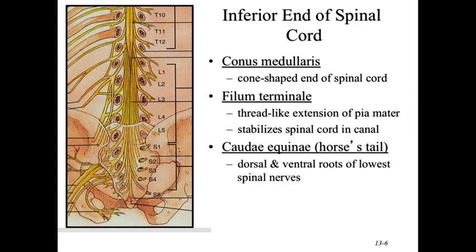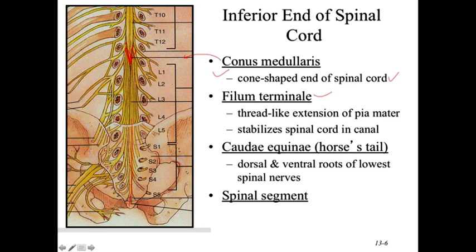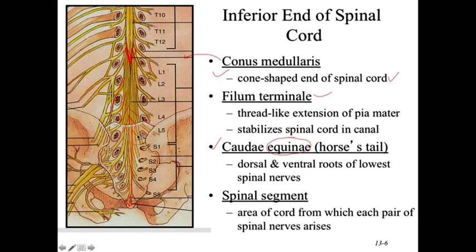At the end of the spinal cord, the conus medullaris comes to a tip at around the L1-L2 interspace — that's the end of the spinal cord. The filum terminale is an extension of piamater that stabilizes the cord, anchoring to the tip of the coccyx. The cauda equina — equina means horse — refers to the nerve root filaments fanning out below like a horse's tail. A spinal segment is simply the area of cord from which each spinal nerve arises.